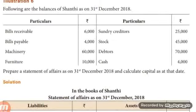Shall we do one problem? The question is: the following are the balances of Shandy as on 31st December 2018. Some assets and liabilities are given. Prepare a statement of affairs as on 31st December 2018 and calculate the capital at that date — that is, the closing capital. Draw the closing statement of affairs and write the title: 'In the books of Shandy — Statement of Affairs as on 31st December 2018.' Write liabilities on the left-hand side and assets on the right-hand side.